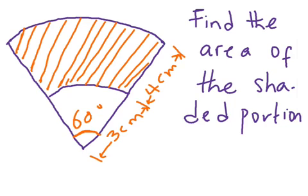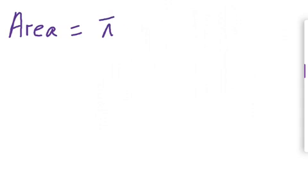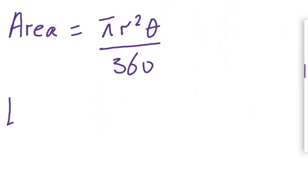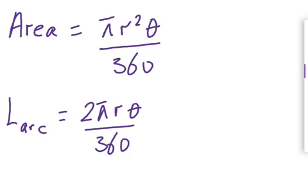Just to do a review of the formulas: the formula for finding the area of a sector is pi r squared multiplied by theta divided by 360. And the formula for length of an arc is 2 pi r theta over 360. If this is your first time watching our lectures, go back to the channel and search for the video on length of an arc and area of sectors.